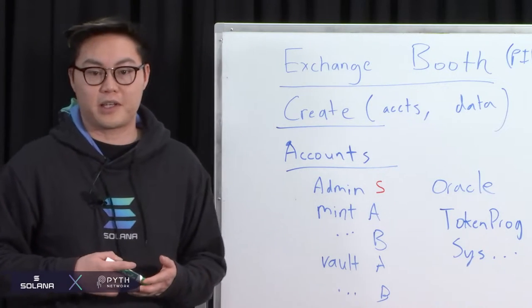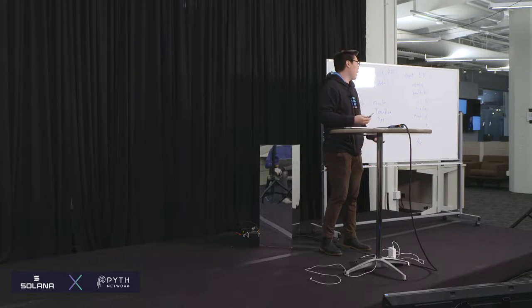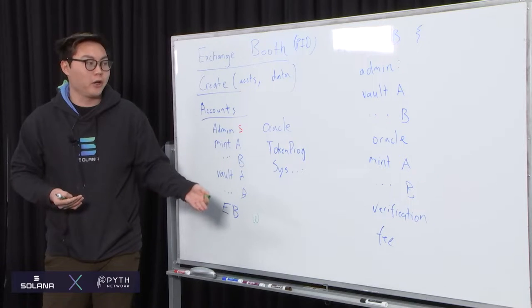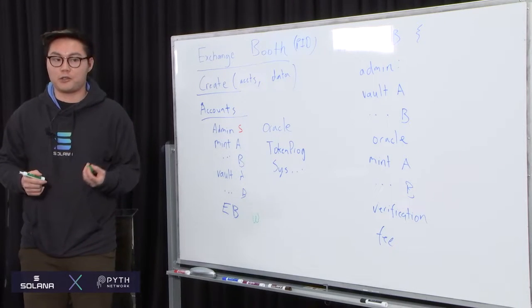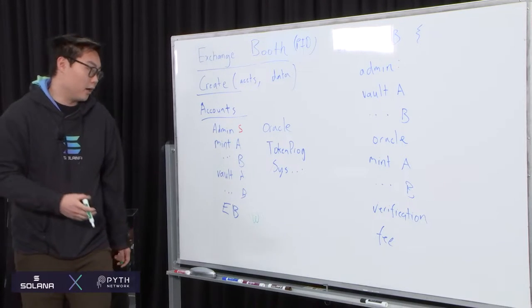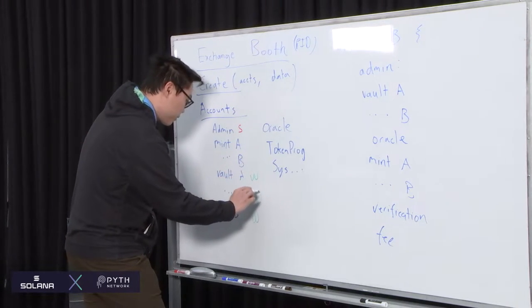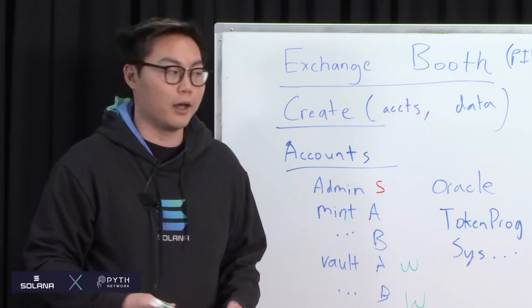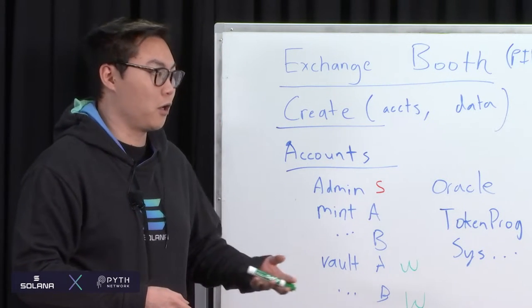The vaults also need to be writable, because if you're creating them on the fly, they start up as empty key pairs with no information, and as you go through the create instruction they get allocated. Now a more critical question: which of these accounts should be PDAs? The vaults are a strong candidate. They're going to be completely governed by the exchange booth itself, so they don't need their own private keys. None of these accounts have to be PDAs, but there are nice benefits. If you make the vaults PDAs, there's exclusive access for this one exchange booth, and the seeds are well-defined so they're easy to look up.